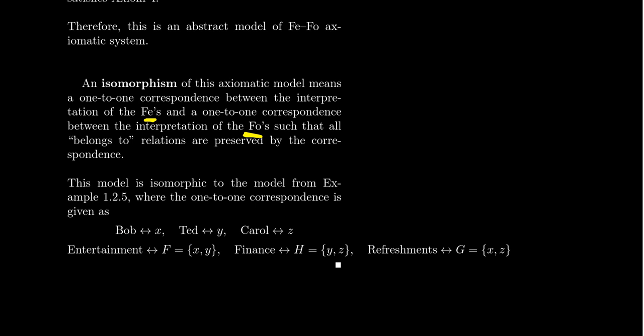We're then going to identify entertainment with F, finance with H, and refreshments with G. You'll remember that the entertainment committee had Bob and Ted, the finance committee had Ted and Carol, and the refreshment committee had Bob and Carol on it.